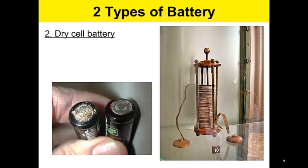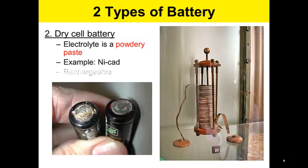The second type of battery is a dry cell battery. The electrolyte is a powdery paste, so you can see the powdery paste there. An example is a nickel cadmium or NICAD battery. These can be rechargeable.